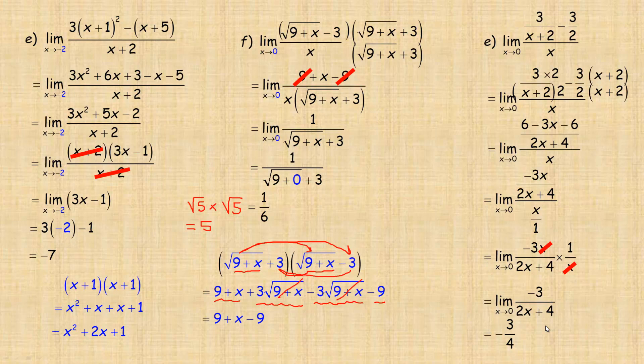So always try to plug in the number first. If you can evaluate the limit, great, you're done. But if you get 0 over 0, try one of these strategies. After you've done a few, you'll recognize that when you see roots, multiply by the conjugate; for rational expressions, use a common denominator; and for algebraic expressions, try factoring to simplify.